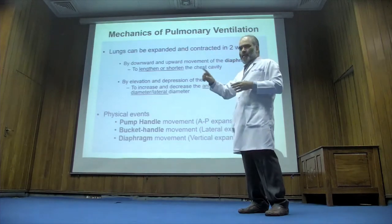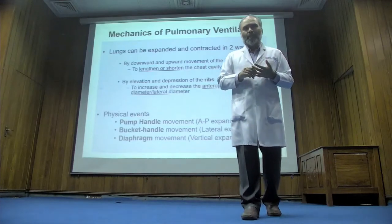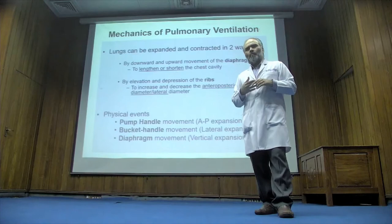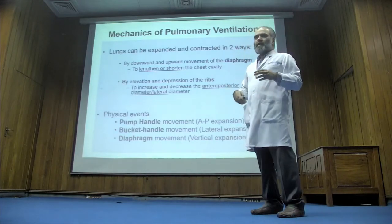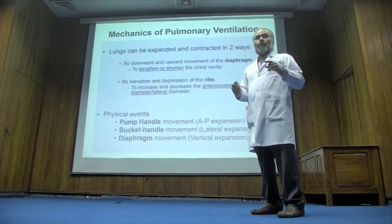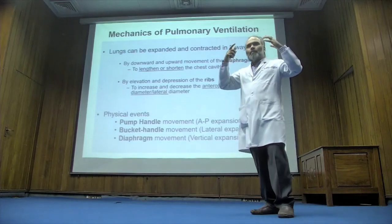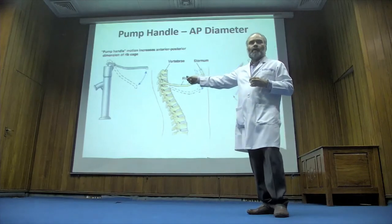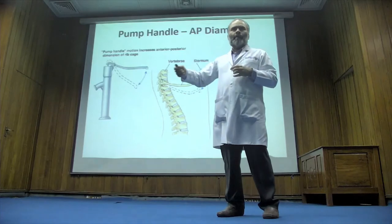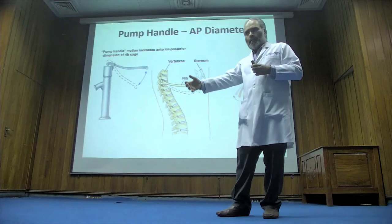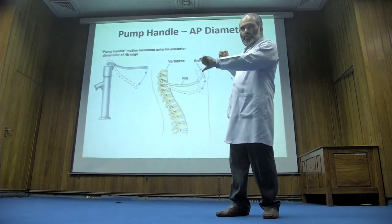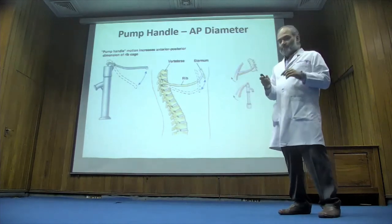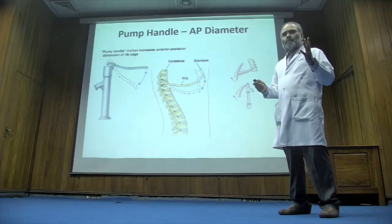These two movements are called pump handle and bucket handle — not always given in the guide, but a very common viva question, especially from older examiners. They use everyday examples to give you a picture of how the chest cage expands. A pump handle is a manual device used in villages to bring out water — you pull it up, creating a vacuum, then push it down and water comes out.